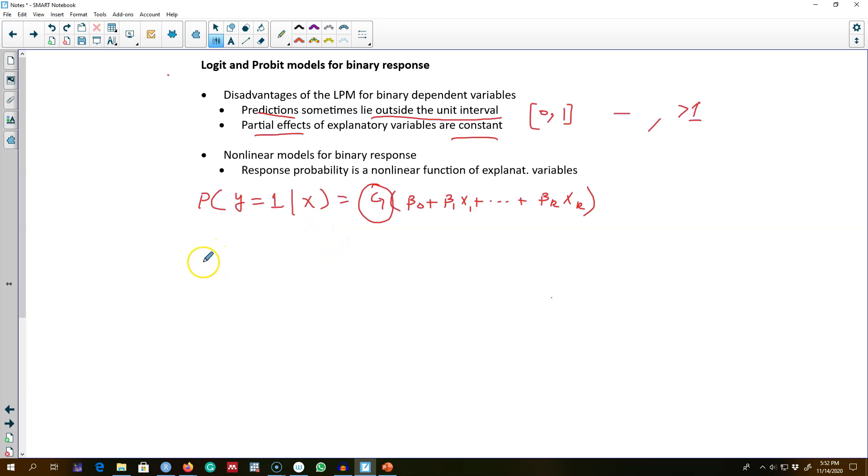Here I'm going to talk about two forms. One is the logit model, which assumes that this g follows the exponent of z over 1 plus the exponent of z. This is the cumulative distribution function for a standard logistic random variable.